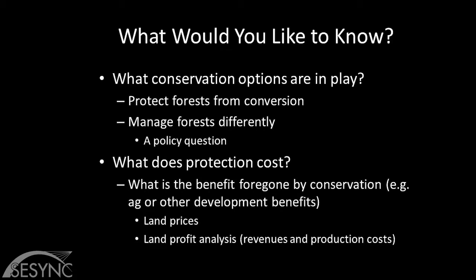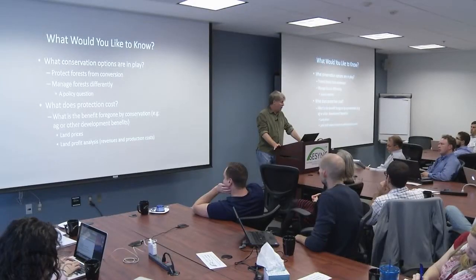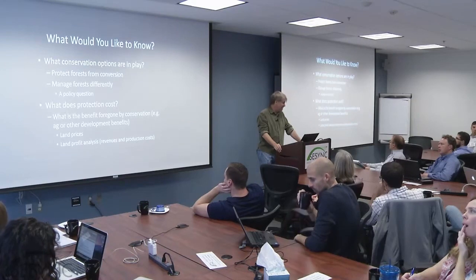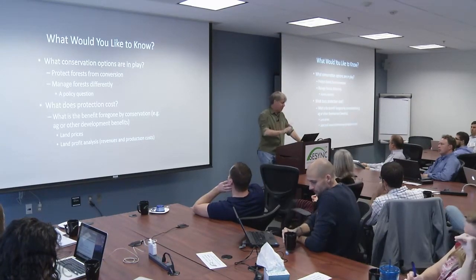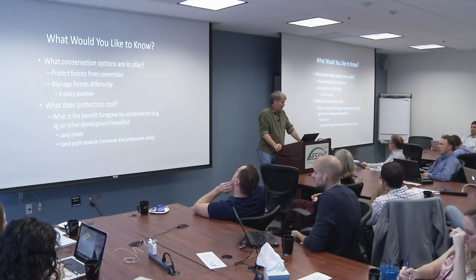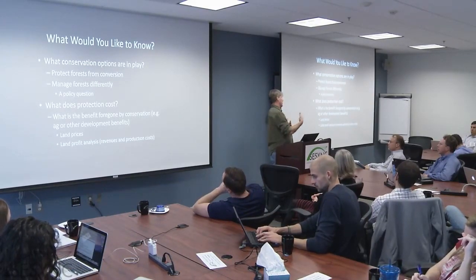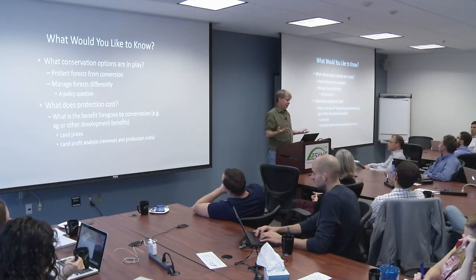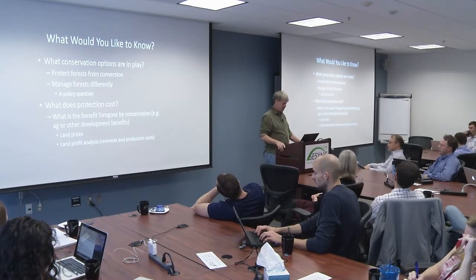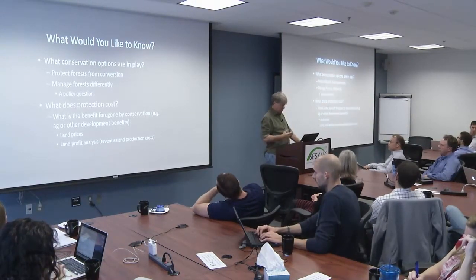We talked about opportunity costs: if you keep the land in forests, what benefits are you foregoing? One way of thinking about that is you could convert it to agricultural or urban land, and that's the opportunity cost you factor in. We can use a combination of land prices — land prices are a signal of those opportunity costs. Or as a complement to land prices, we can simulate what we think the profitability of the land would be in agriculture by thinking about yields, costs, and in effect mimicking the profitability of those lands in other uses.